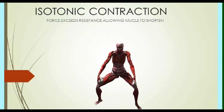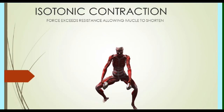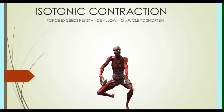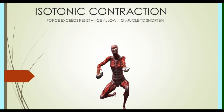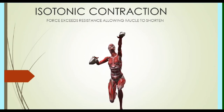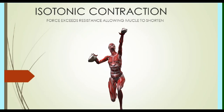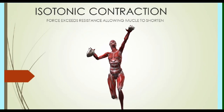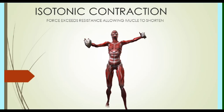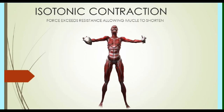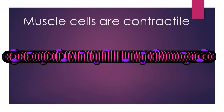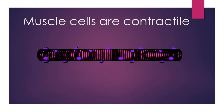In contrast, an isotonic contraction is one in which the force which the muscle generates exceeds the resistance from the load, and so therefore the muscle may move. In isotonic contractions, the muscle will actually shorten, while in isometric contractions, force is generated but the muscle fibers do not shorten.